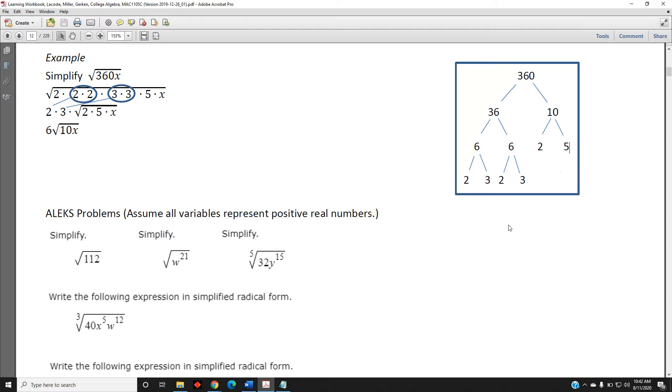And we write them in numerical order. There are three 2s, shown here. There are two 3s, and a 5. And of course, don't forget about the x.